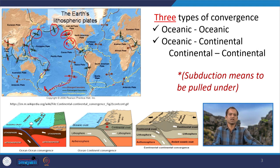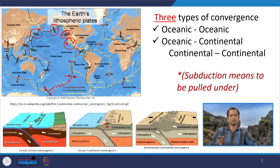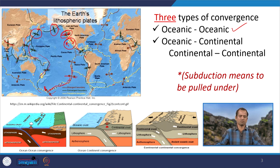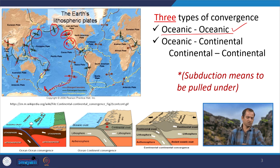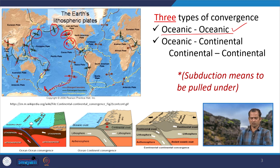There are three types of convergence depending on which type of plate is converging. The first is oceanic-oceanic convergence, where one oceanic plate converges under another oceanic plate — for example, one oceanic lithosphere going under another oceanic lithosphere.